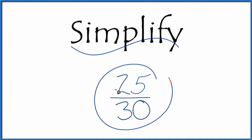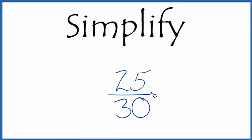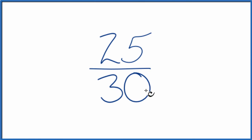Let's simplify the fraction 25 thirtieths. What we're trying to do is find another fraction that's equivalent. It has the same value as 25 divided by 30. It's just that we've reduced it to lowest terms.